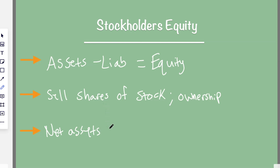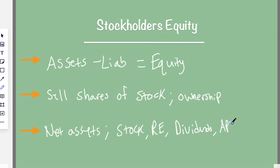There's a lot of stuff involved with equity. To give you some examples: you've got stock, retained earnings, dividends, and something called APIC — which means additional paid-in capital. A brief definition of APIC: when you sell shares of stock to the public, there's a stated rate of what the stock is worth when you first founded the company, and then there's a market value of that stock, which can be different. We'll cover the general definition and calculation here.